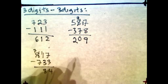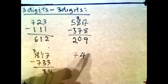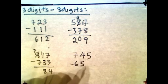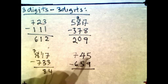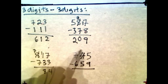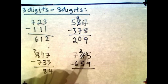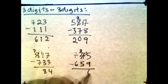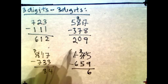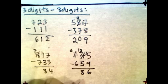Let's do the last one: 745 minus 659. 5 minus 9 — 9 is bigger, so we borrow from the 4 tens, which becomes 3, and carry 10 to the 5, making it 15. 15 minus 9 is 6. Now 3 minus 5 — can't do it, so borrow from the 7 hundreds, which becomes 6. That makes it 13. 13 minus 5 is 8. Then 6 minus 6 is 0. The answer is 86.